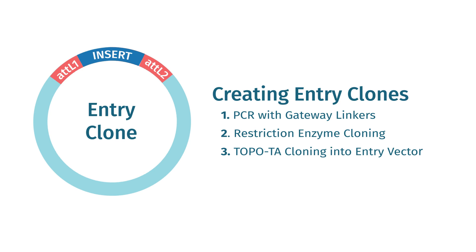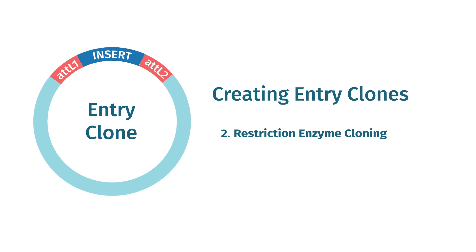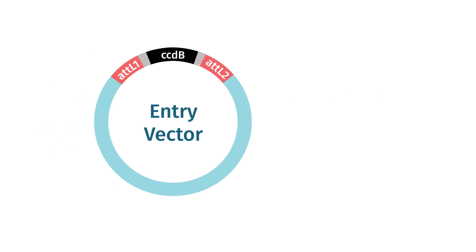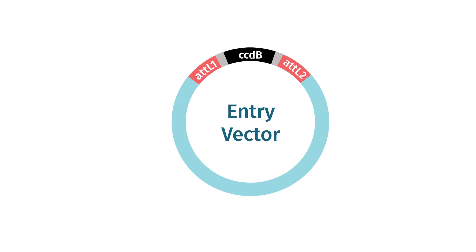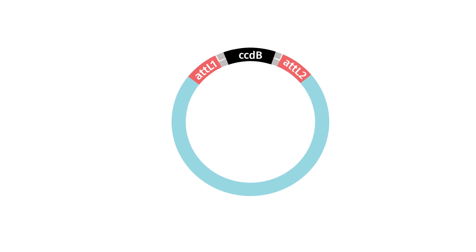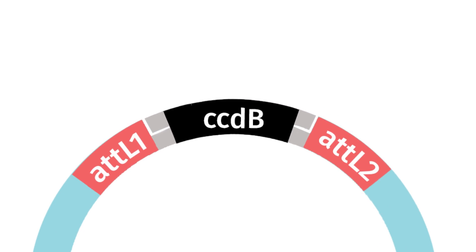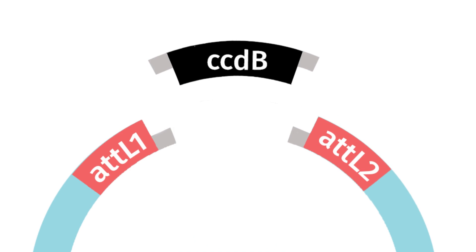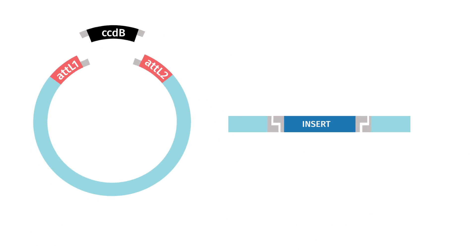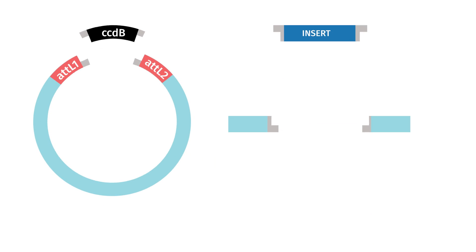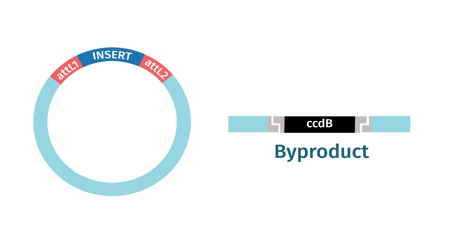Alternatively, you can create an entry clone using standard restriction enzyme cloning. This strategy takes advantage of two multi-cloning sites on an entry vector. Entry vectors contain AT-L1 and AT-L2 sites with a chloramphenicol resistance CCDB cassette between them. Successful creation of your entry clone replaces the CCDB cassette with the fragment of interest using a standard restriction enzyme cloning workflow.